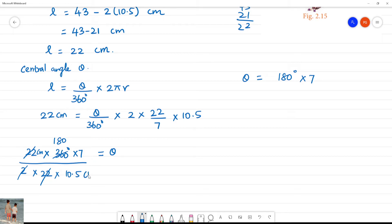Cancel the two, 180. Then theta is equal to 180 degree into 7 divided by 10.5. Multiply by 10: 180 degree into 70 by 105. Seven cancels. So theta is equal to 120 degree.